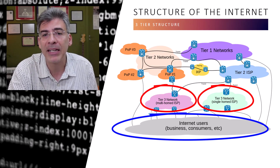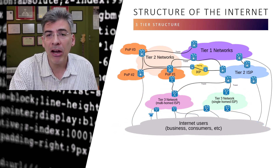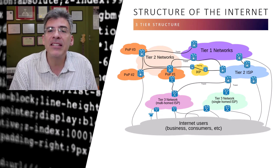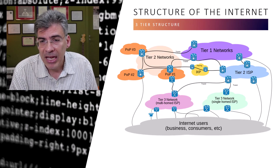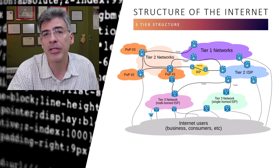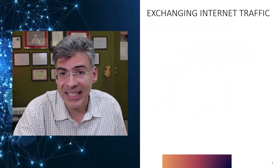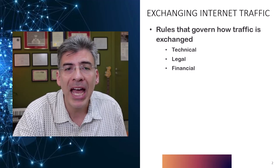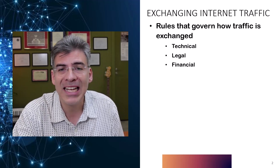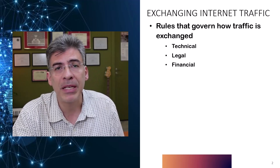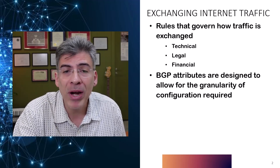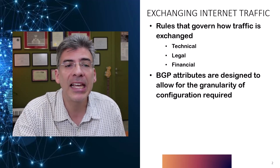Tier 3 is the telco that you actually buy your broadband connectivity from. The structure you see here in the diagram is essentially why BGP uses autonomous systems or ASs to deal with routing, because each of these ISPs is comprised of one or more BGP ASs. BGP uses those ASs as the fundamental building blocks through which it performs its routing operations. Internet traffic must be exchanged between these entities, and there are rules that govern how that traffic is exchanged. Some rules are technical, others are legal, and still others are financial—all containing a level of complexity beyond what a mere IGP can provide. The attributes of BGP have been designed to allow for a very detailed configuration of how traffic is routed and exchanged between these entities.